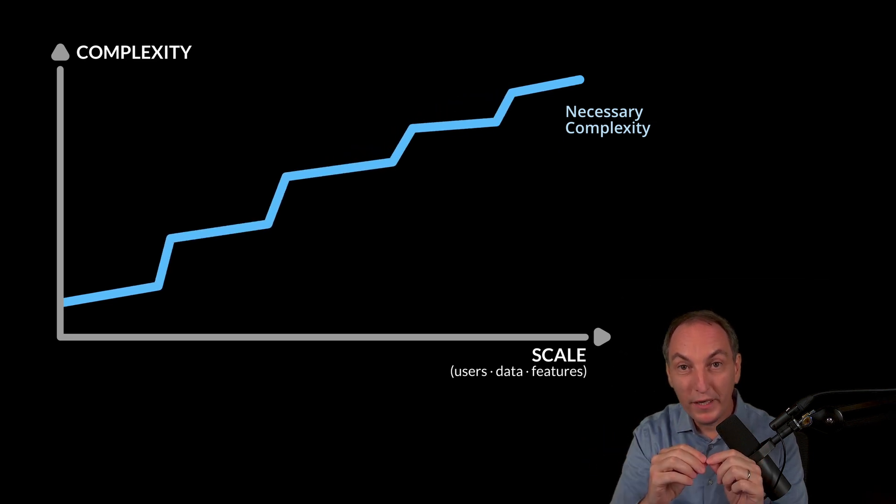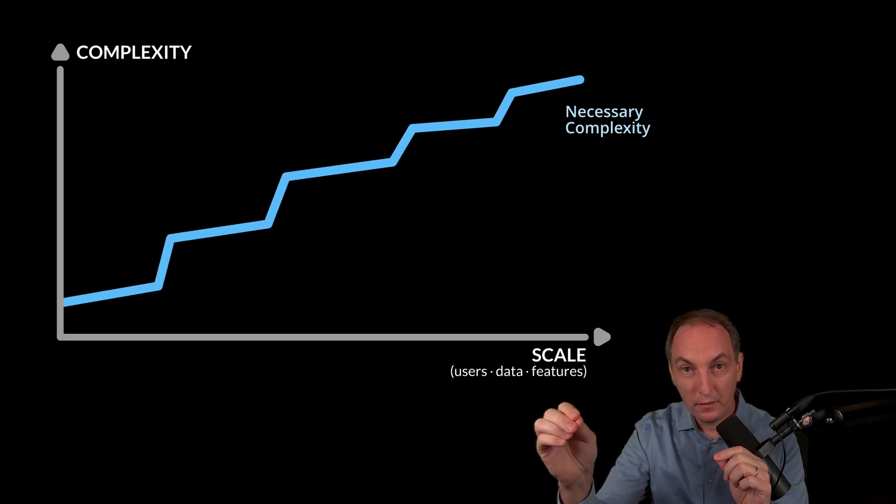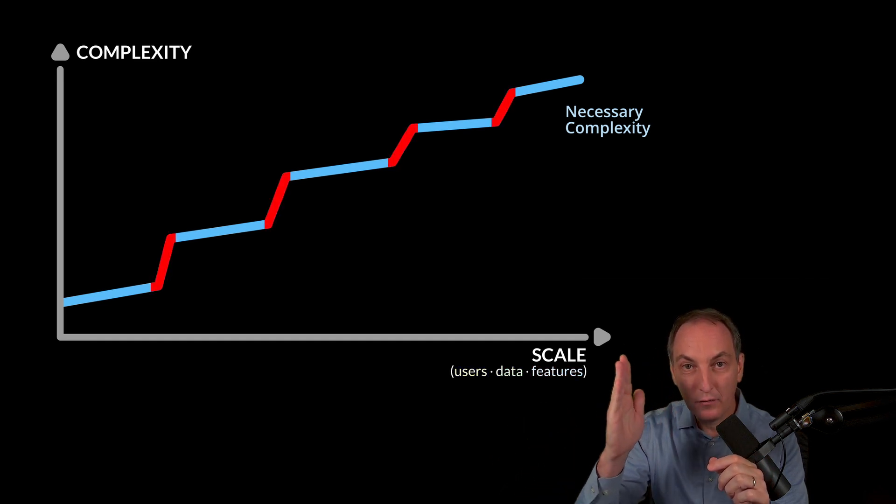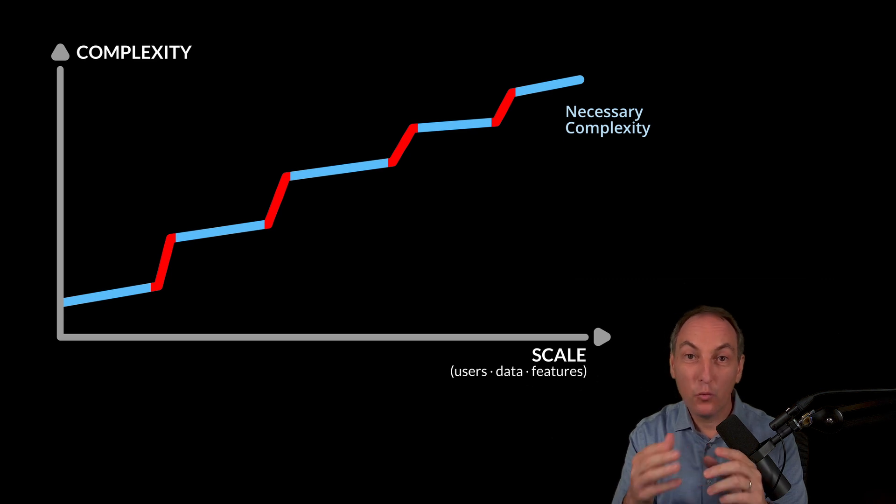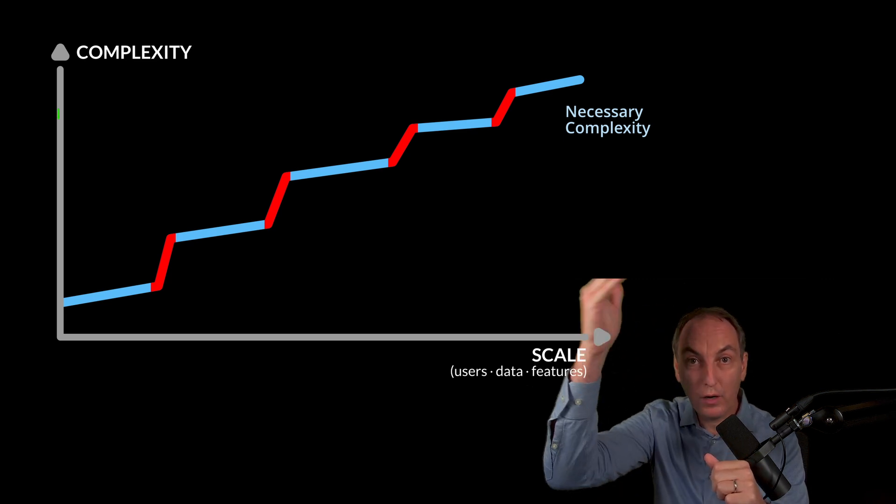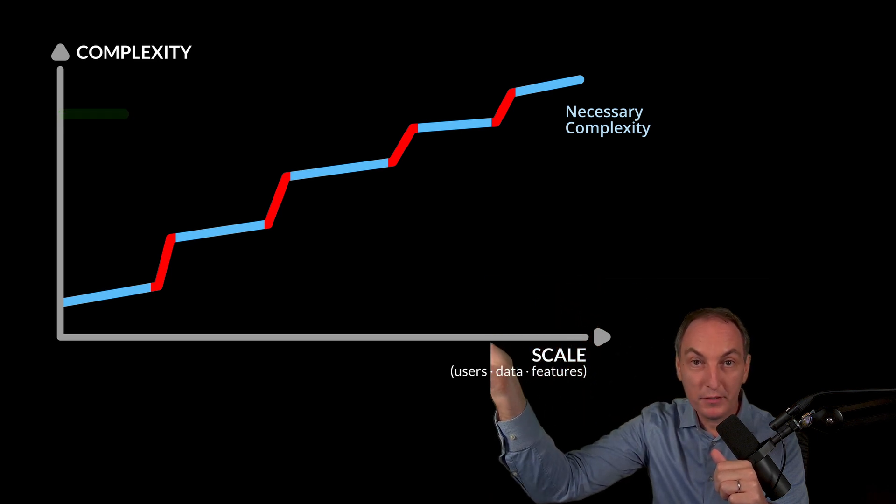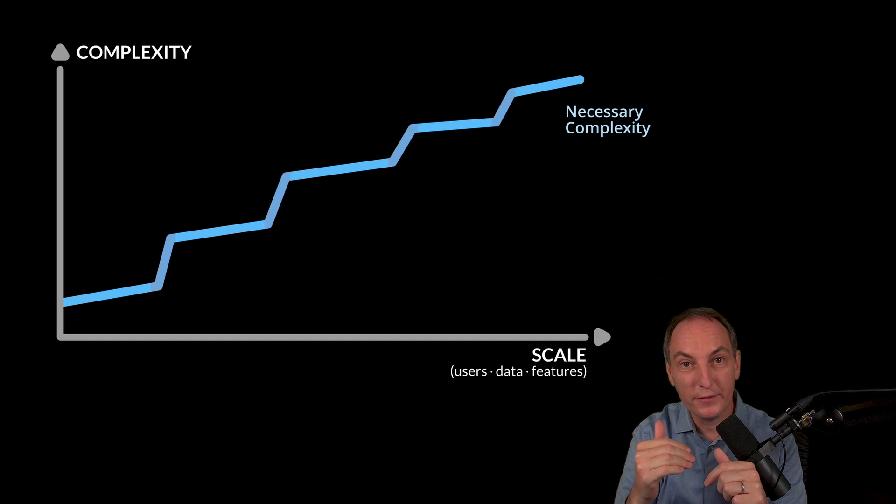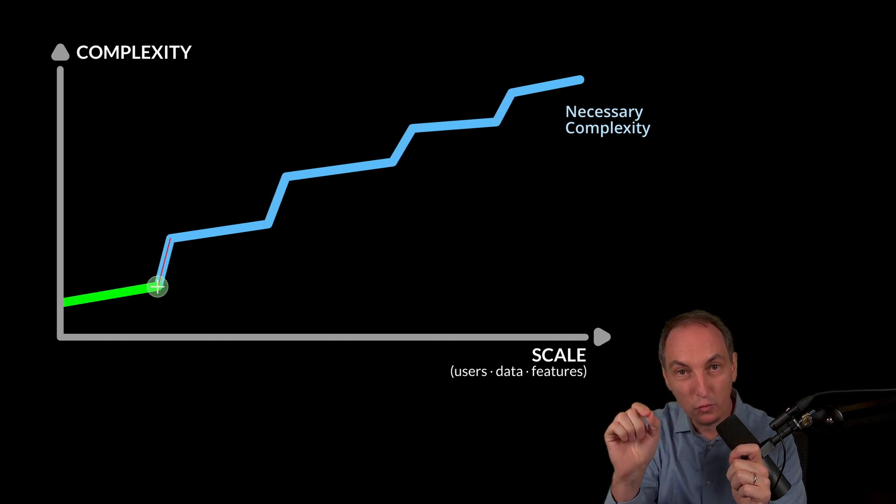During the lifespan of the project, some requirements from users, data, or features will create those spikes of complexity. What we don't want is to start too high and over-anticipate, because we might anticipate the wrong steps. But at the same time, we don't want to start too low either and stay too close to this curve, because we will hit those walls.